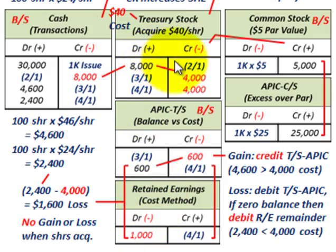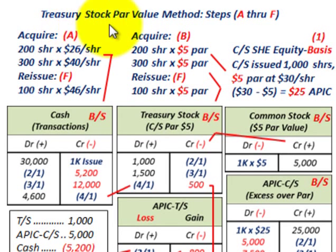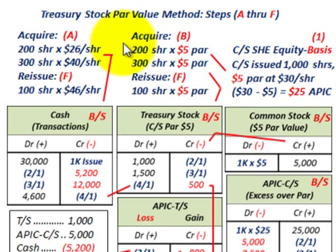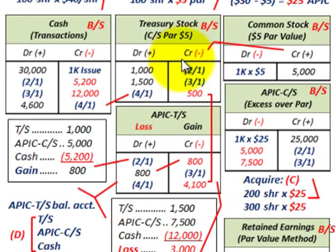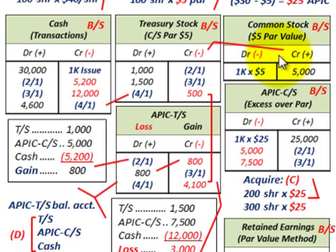That takes care of the treasury cost method. Now let's look at the treasury stock par value method. This is where the common stock and the additional paid-in capital for the common stock come into play. Remember, with the cost method, we didn't involve ourselves with common stock and its additional paid-in capital. But with the par value method, you do.